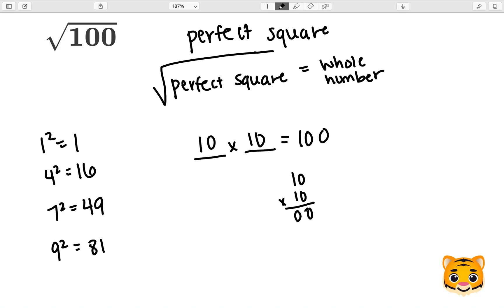1 times 0 giving us 0, a 0 as a placeholder, 1 times 0 giving us 0, and lastly 1 times 1 giving us 1 for a final answer of 100.